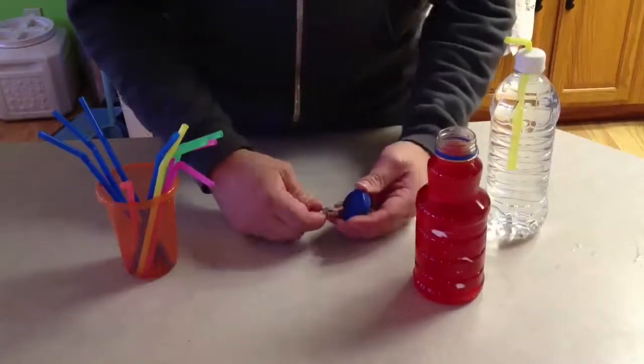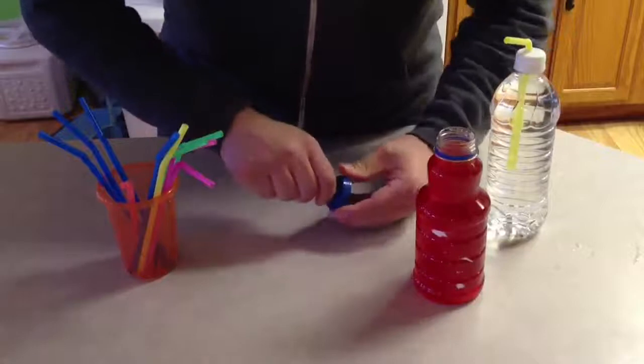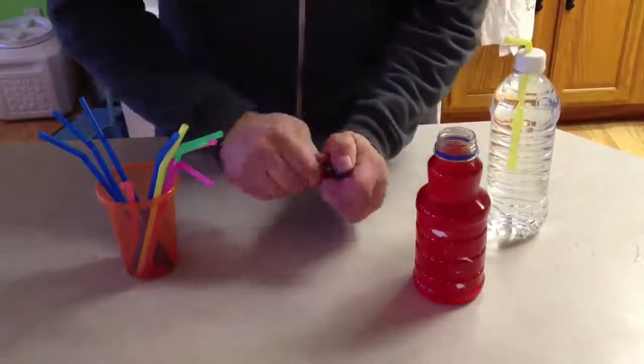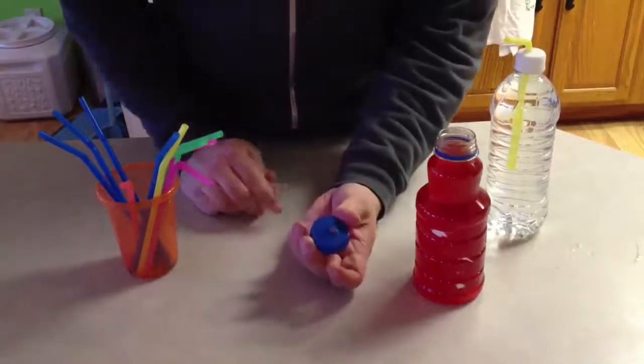and press it into the top of the lid. Twisting slowly, you're able to puncture through the lid, and then turn the key once to create a perfect hole.